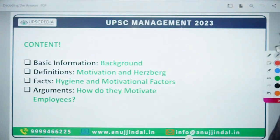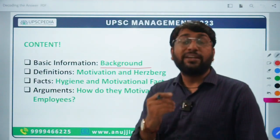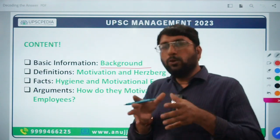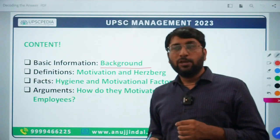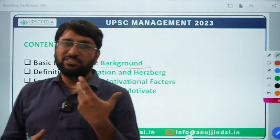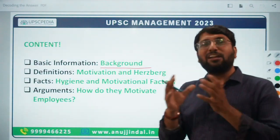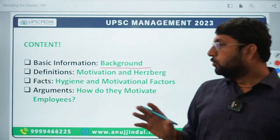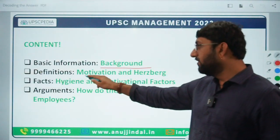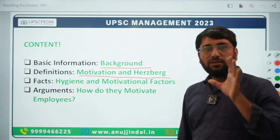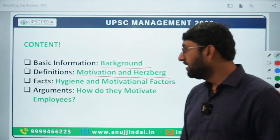The next part is content. The first content part is basic background. In the background, you explain why motivation is called a daunting task — you can write a few lines about how human behavior is considered to be the most complex element. What motivates me might not motivate another person. Motivation speakers come, people feel happy, become very enthusiastic — but after a while the motivation fades. So the first part is: define motivation, give its background, define Herzberg's theory briefly — what was his basic tenet or premise for giving this theory.